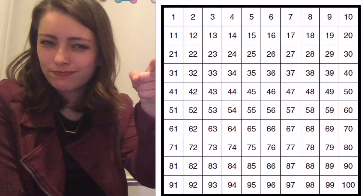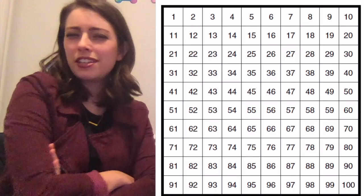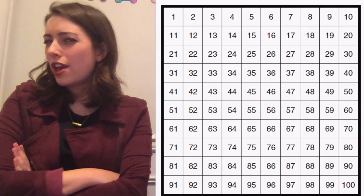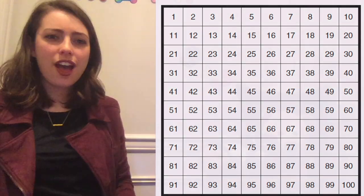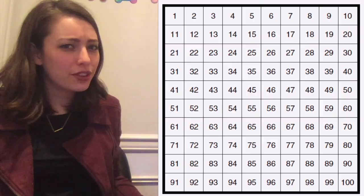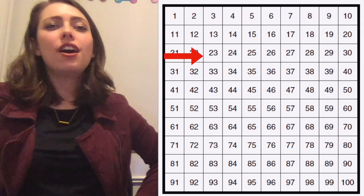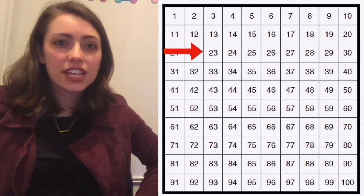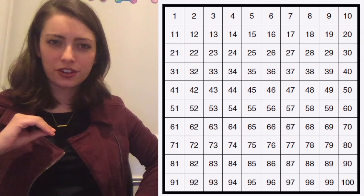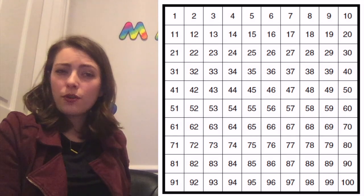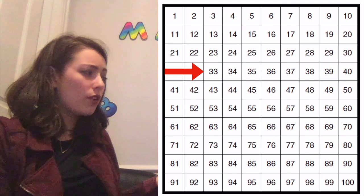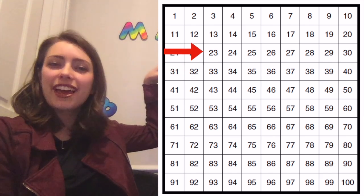And now for your next task: find the number that is 10 less than 33 and point to it. 23 is 10 less than 33. And where was that 23? The 23 is right above the 33. So all we have to do is move up one when we subtract 10.